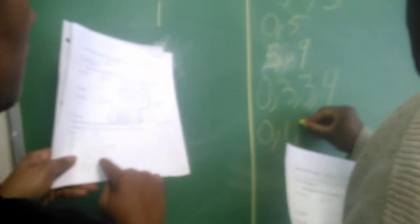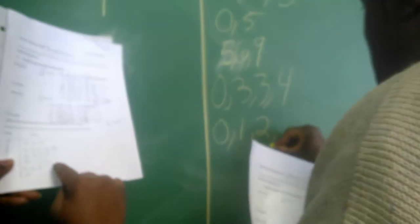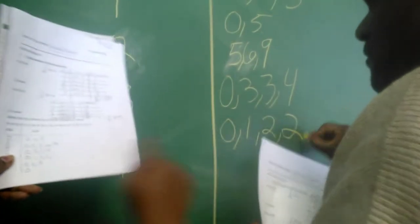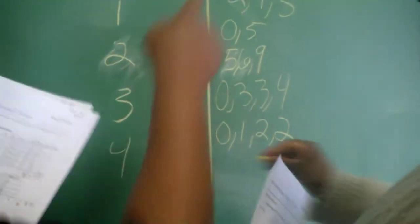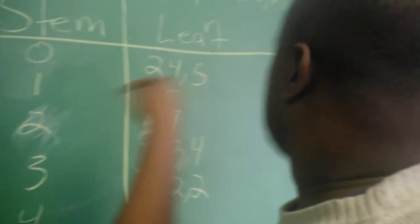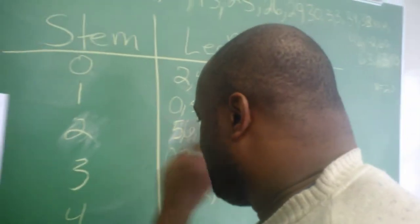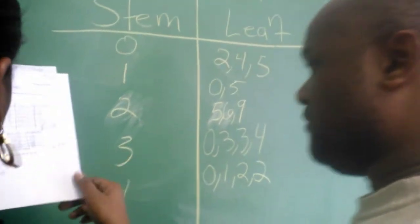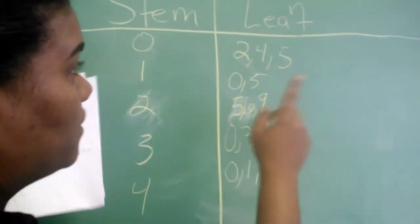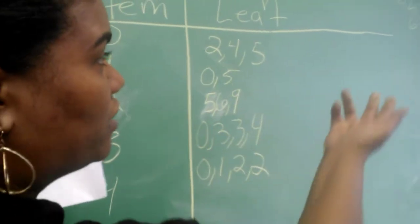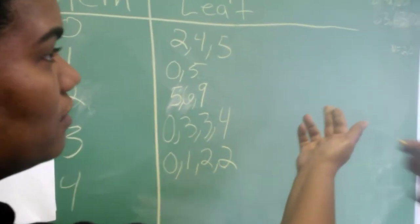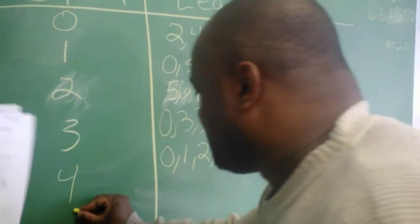And then one, two, two, see? Then we go down to — no, there's no five here. Remember, there's no five, there's no seven, no five. Right, six. We go six.